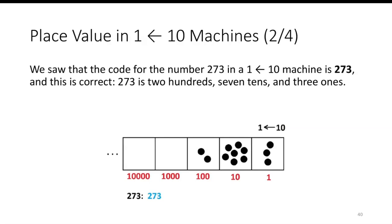We saw that the code for the number 273 in a 1←10 machine is 273, and this is correct. 273 is two hundreds, seven tens, and three ones.